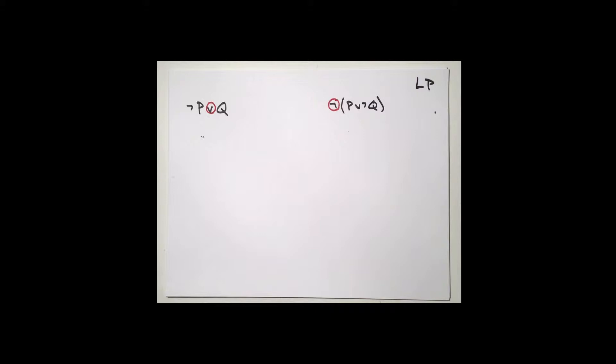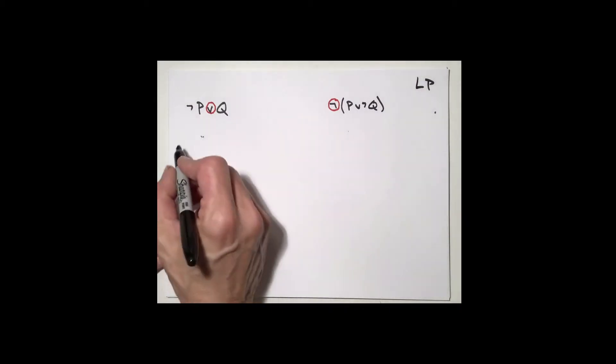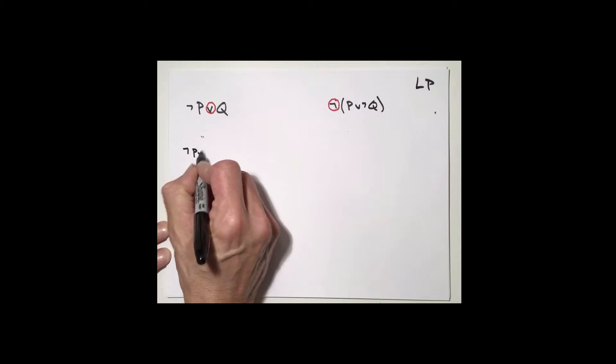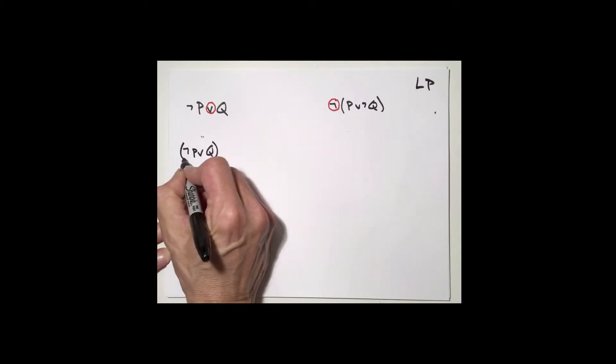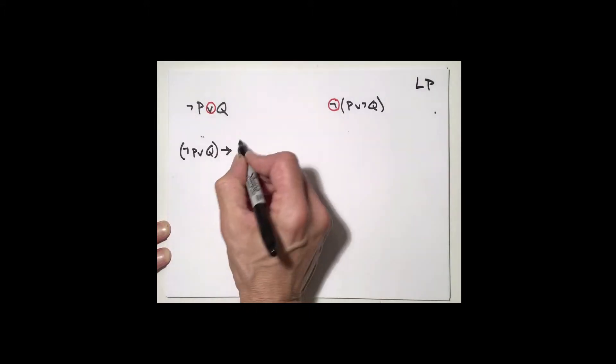No problem. Let's now try something a little bit more challenging. Let's suppose we consider a more complex sentence, maybe the one that joins these two sentences together in some way. So maybe we have not P or Q and I'm going to restore the outermost parentheses and then join them with an arrow to not and then P or not Q.